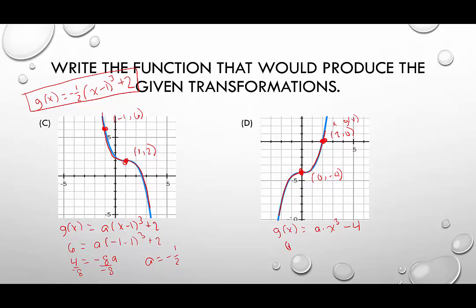So we're going to say 0 equals a times 2 cubed minus 4. We're going to add 4 to both sides. So that's going to give me 4 equals 8a. Divide both sides by 8, and we end up with a equals 1 half. It is positive, as I suspected.